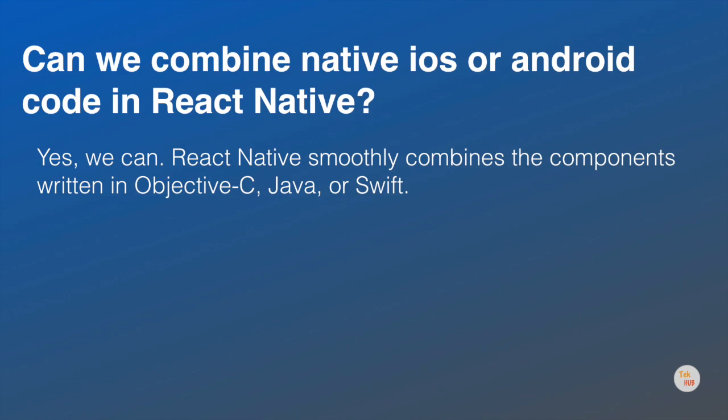Next question is: Can we combine native iOS or Android code in React Native? The answer is yes, we can. React Native smoothly combines the components written in Objective-C, Java, or Swift. Integrating React Native into an existing application is a great way to increase the speed of development, make more complex apps, and implement the same feature for both iOS and Android simultaneously.